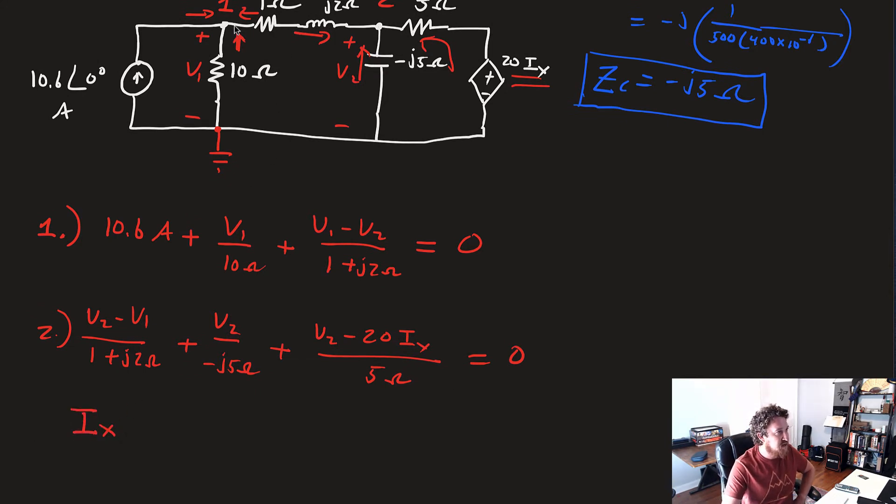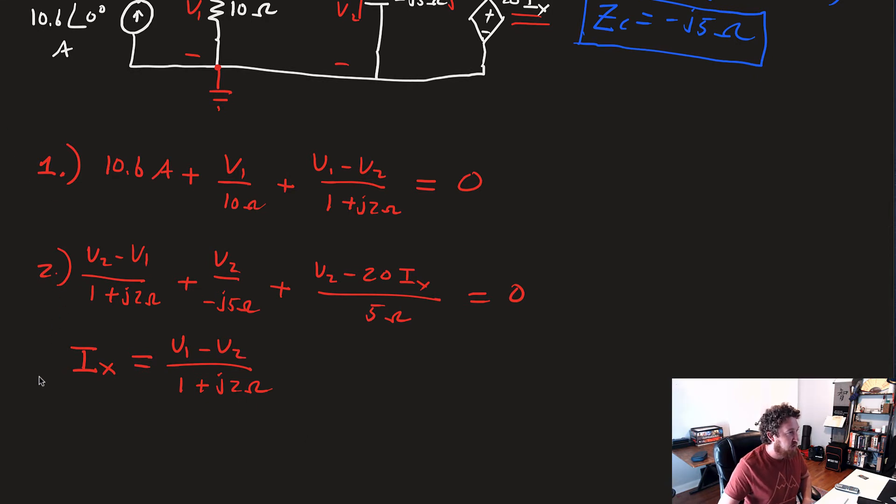And then finally, we'll need the equation for Ix. Since that goes from node 1 to node 2, we'll say Ix equals V1 minus V2 over 1 plus J2 omega. There we have our three equations.